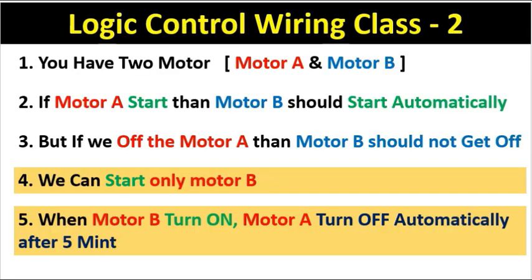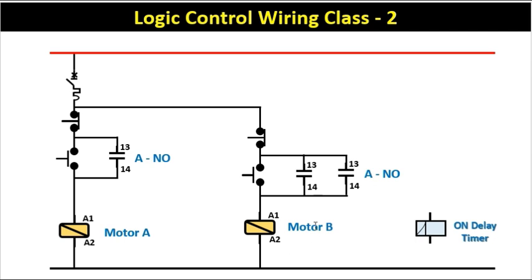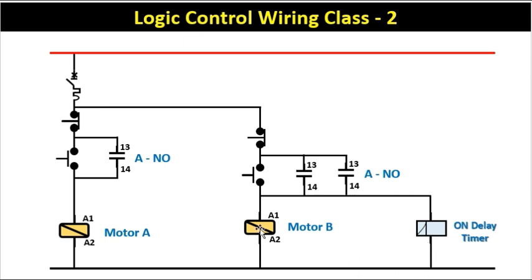Now in the conditions, if we turn on motor B, motor A should turn off. The power supply going to contactor B — we take this and also connect it to the timer. So when power supply goes to contactor B, this timer also gets power supply. I connect one more wire from this wire to supply the timer. We also connect neutral power supply to the timer. According to this circuit, if we press the start push button, power supply goes to both contactor B and this timer.